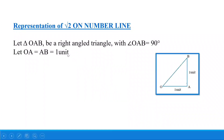Let us see how the triangle looks like. I have the triangle OAB where OA and AB are both one unit and angle OAB is equal to 90 degrees.